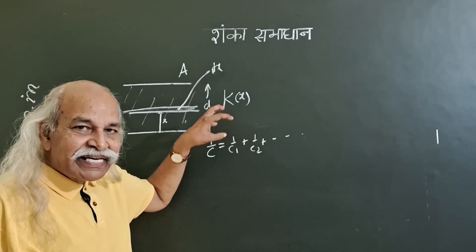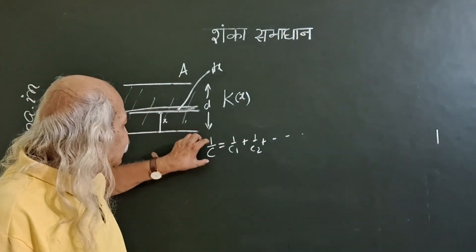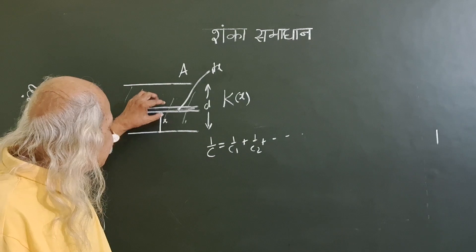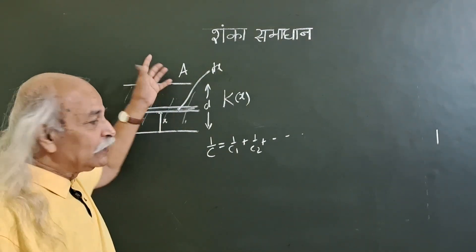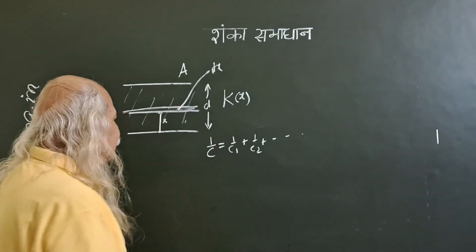So what you have to get is 1 by c, 1 by c of this, and then integrate that 1 by c to get the total 1 by c.